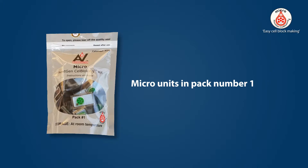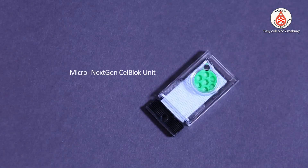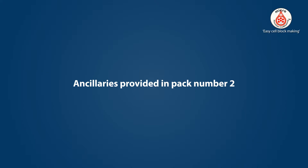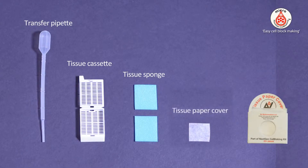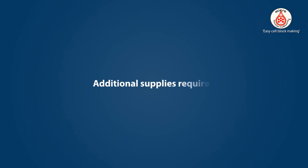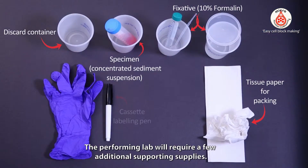Micro-units are provided in pack number 1. Ancillary supplies are provided in pack number 2. The performing lab will require a few additional supporting supplies.